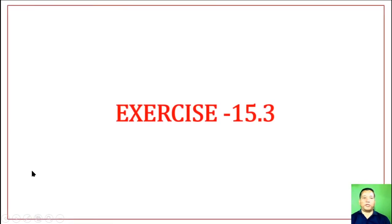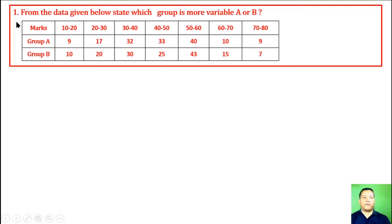Exercise 15.3, Question 1. From the data given below, state which group is more variable A or B. Marks 10 to 20: Group A is 9 and Group B is 10. Marks 20 to 30: Group A is 17 and Group B is 20.